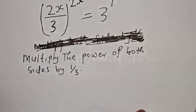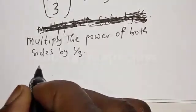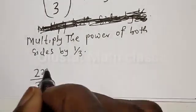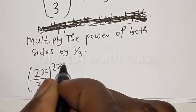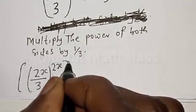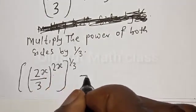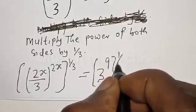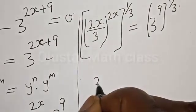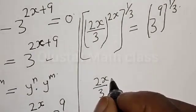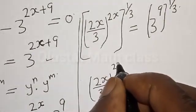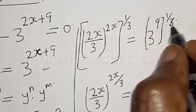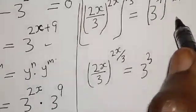Let's multiply both sides by the power of 1 divided by 3. That is, we have 2s divided by 3, raised to power 2x, then raised to power 1 divided by 3, is equal to 3 raised to power 9, then raised to power 1 divided by 3. This gives us 2s divided by 3, raised to power 2x divided by 3, is equal to 3 raised to power 3.